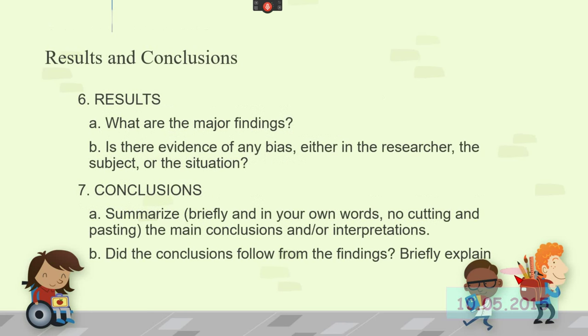Results and conclusions. So the results are going to be the major findings. And is there any evidence of bias either in the research or the subject or the situation. What are major findings? Typically with quantitative studies, you will see tables of statistics being reported or the reports of specific tests that they run on, like for example a t-test result or a result of an analysis of variance or a linear regression. Things like demographics tables, those sorts of things are probably not major findings.